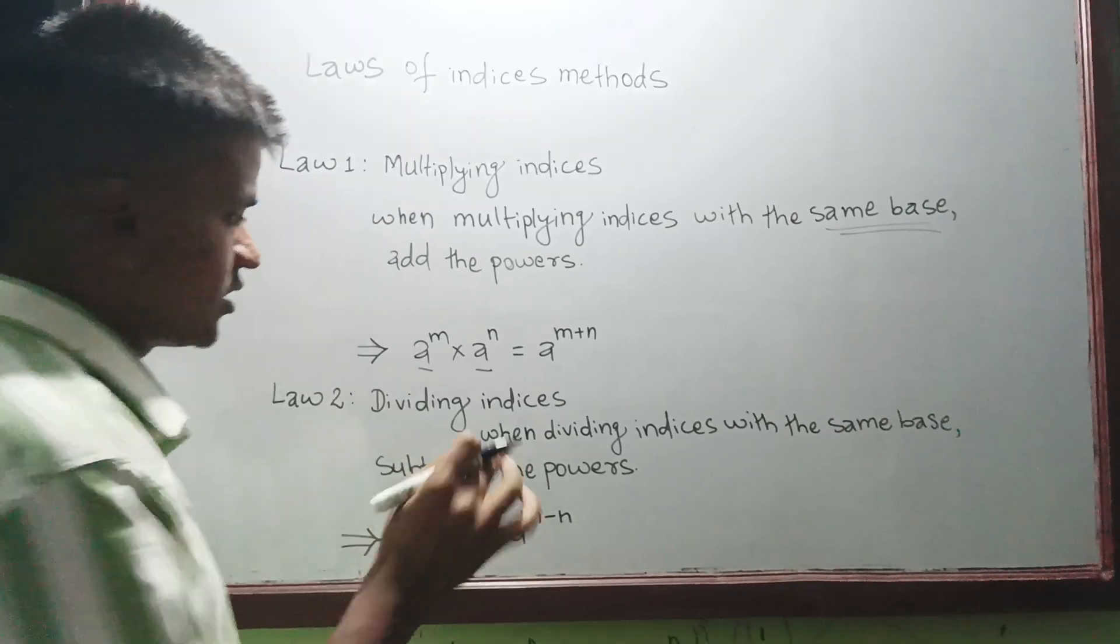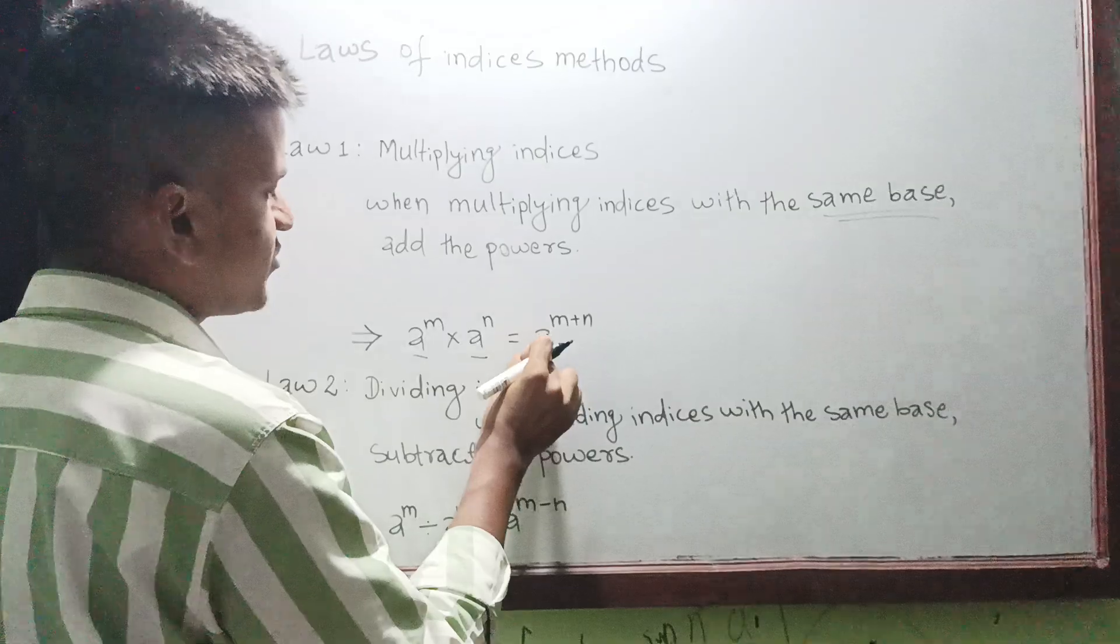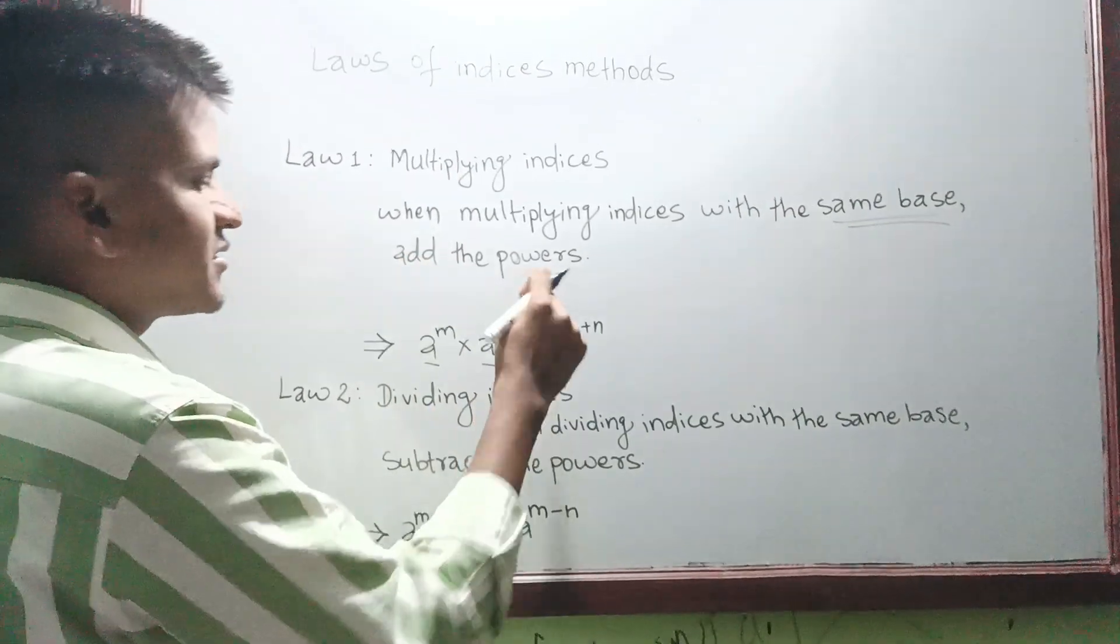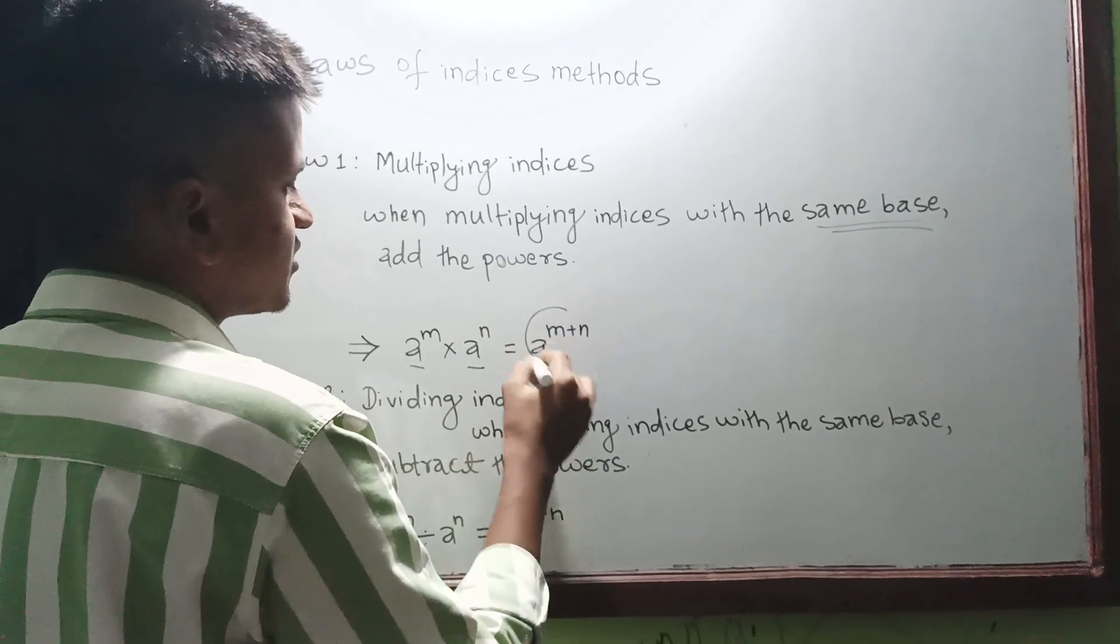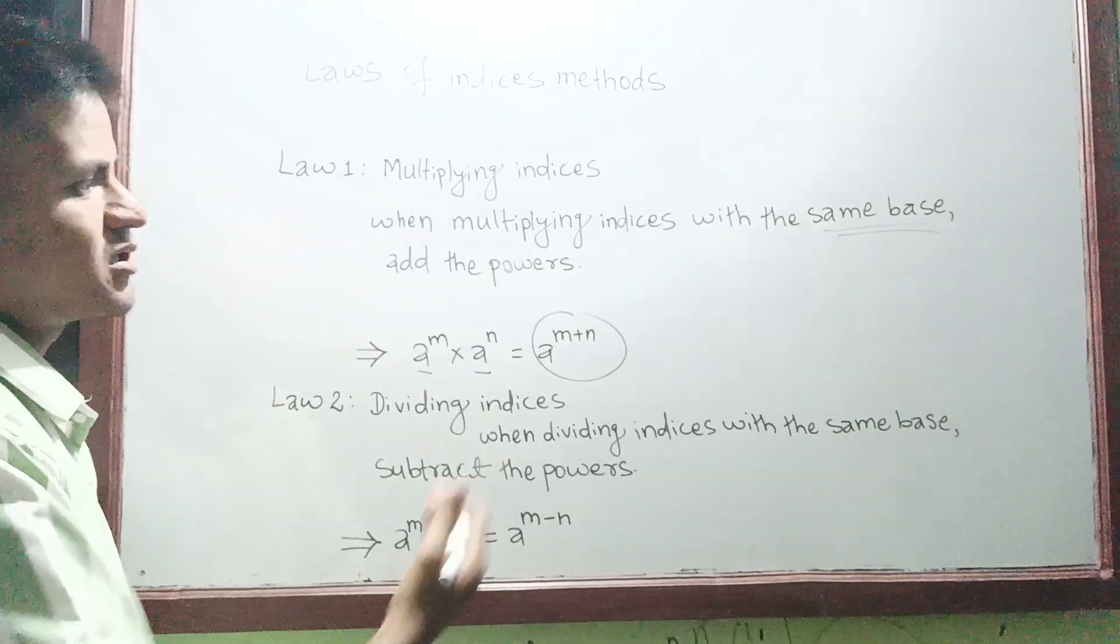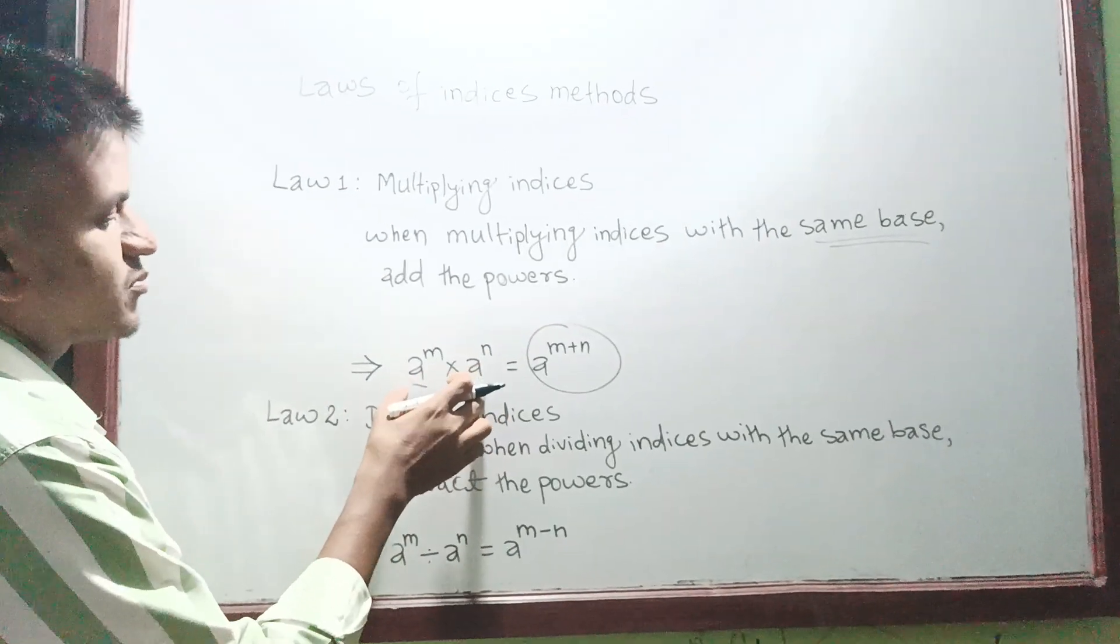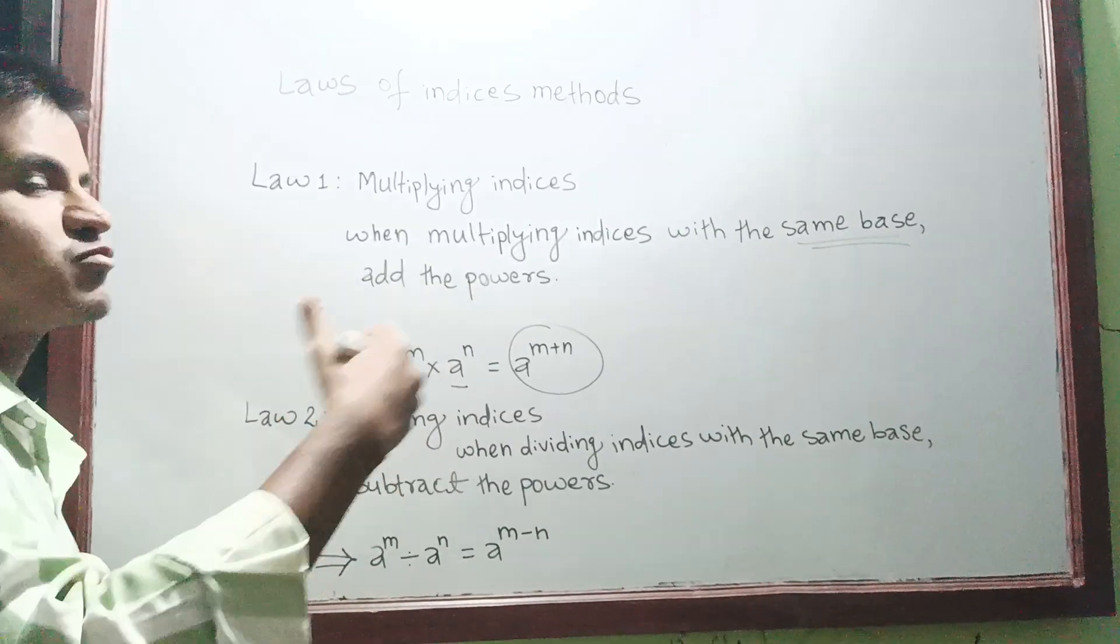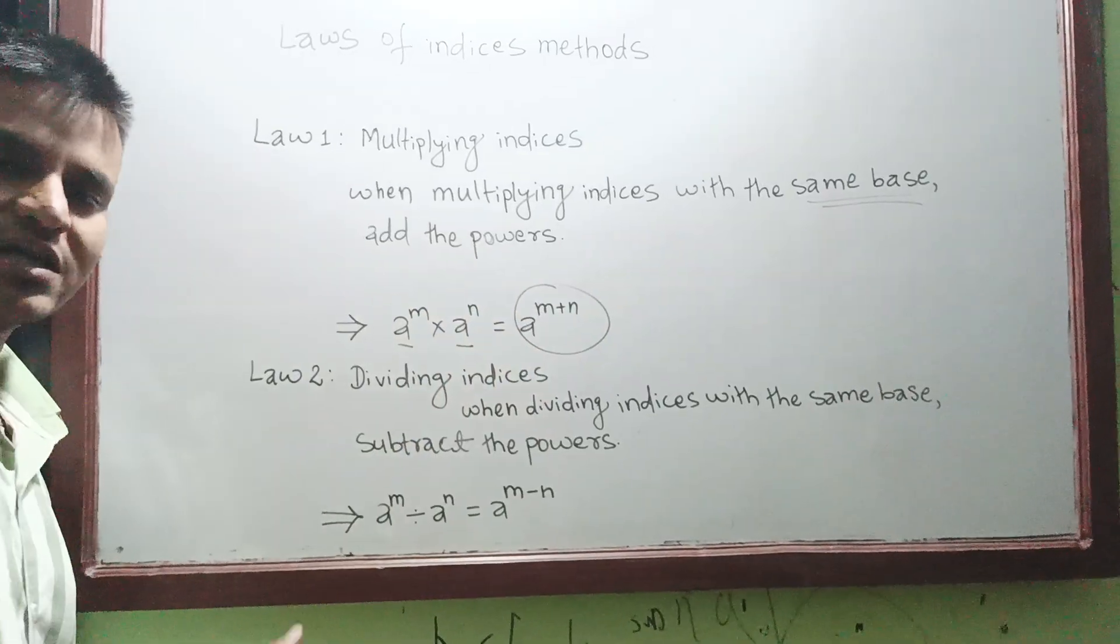What we have to do is simply take one base and add the powers. So m plus n - that's all, that is our answer. Now when we do a mathematical problem, sometimes the bases will not be same. In that way we have to manage the bases and make them the same so that we can do the calculation. We will see it further.